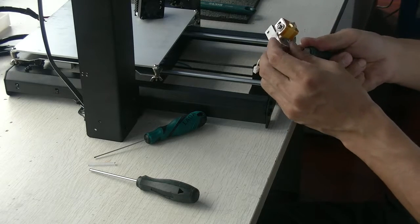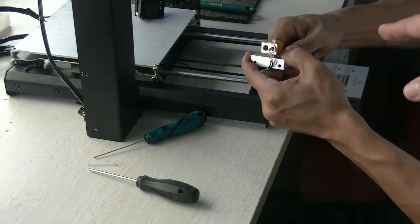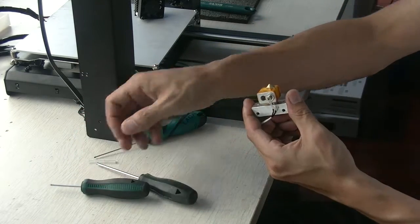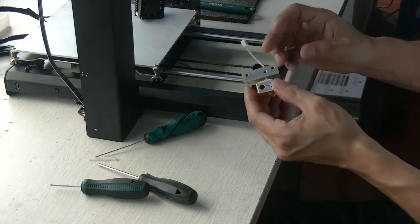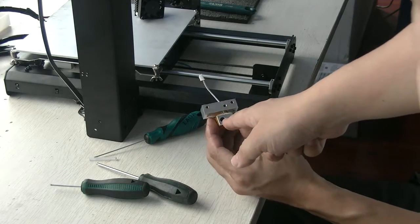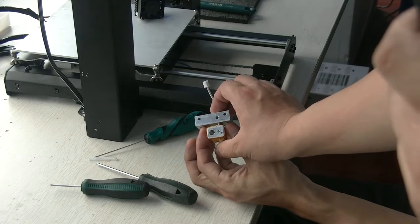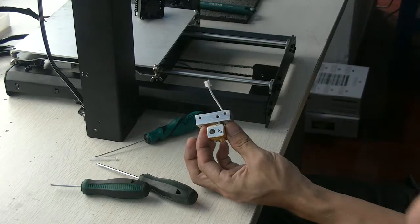If you have already turned or made it a little bit loose, you need to use another hex wrench, 2.0 hex wrench, to lock. It's a set screw to lock the hot end. So you tighten it.